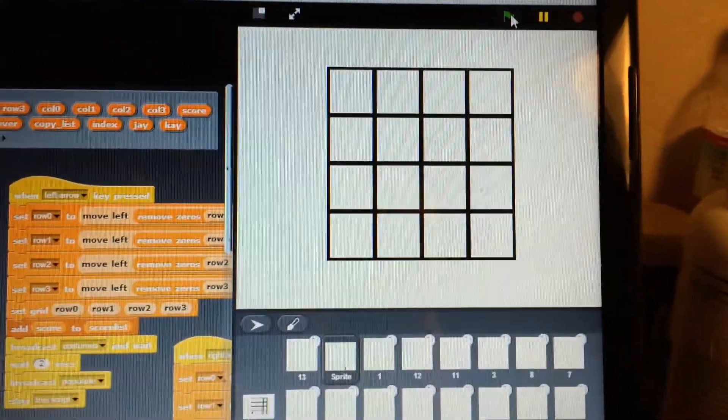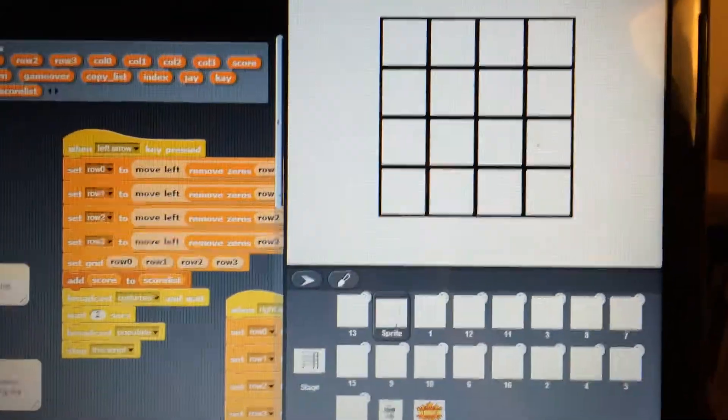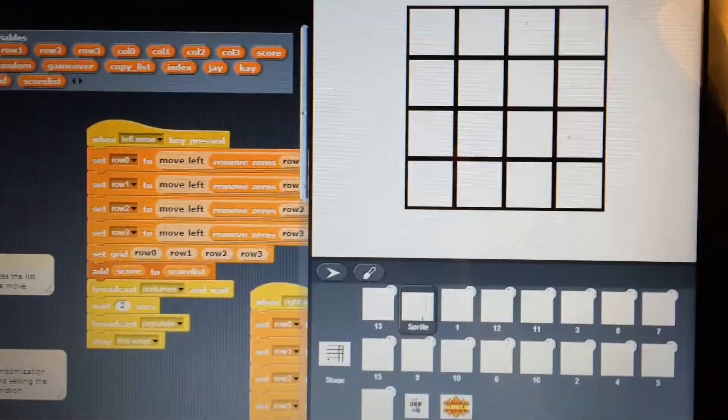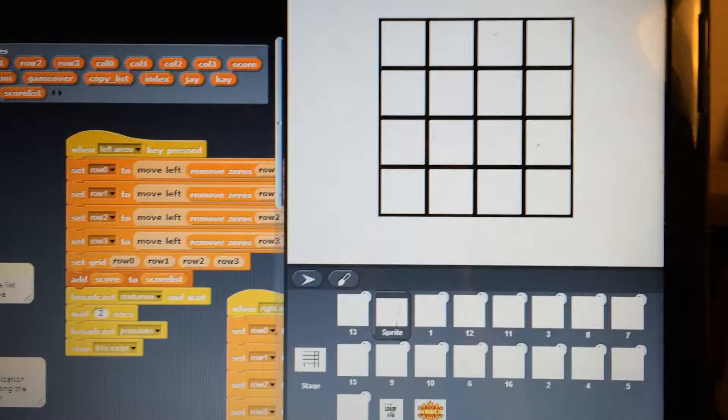2048 is a 4x4 tile game where you can move numbers from left to right, right to left, up, and down to the furthest away available spot.